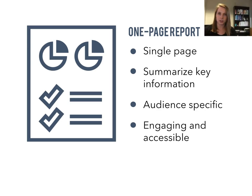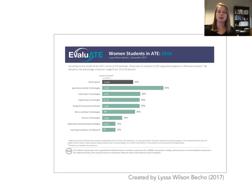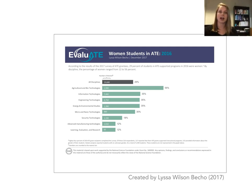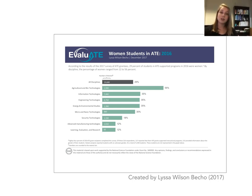We have a few examples to share about one-page reports, really in order to spark your imagination on how you might use them in your own practice. This first example is from an actual annual survey done from a national program, the Advanced Technological Education Program. It's a simple data snapshot with a really big title — counting the number of women students in the ATE Project in 2016 — and you can easily compare across all these different categories, though it's showcasing data that might be on page 45 of the full report.